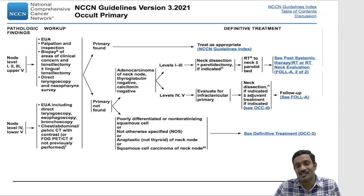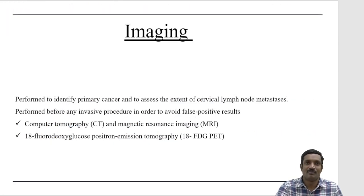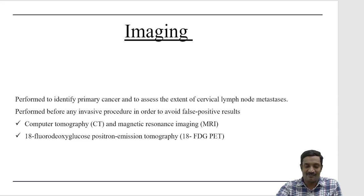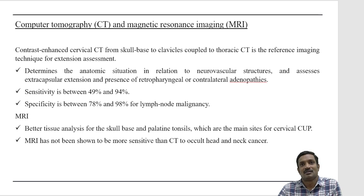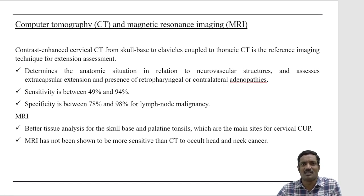If after all investigations no primary is found: for adenocarcinoma of an upper or middle neck node, perform neck dissection with or without parotidectomy, followed by radiation to the neck. For adenocarcinoma of a lower neck node, identify and treat as infraclavicular primary — lower neck adenocarcinoma never comes from a head and neck primary. For squamous cell carcinoma or poorly differentiated carcinoma where no primary is found, treat according to the carcinoma of unknown primary protocol.